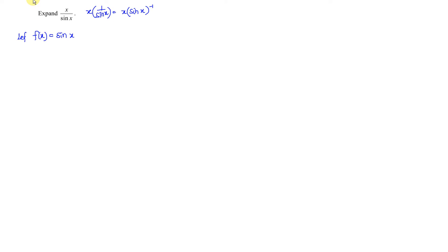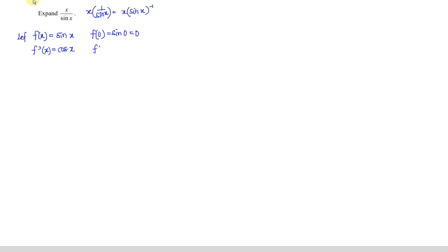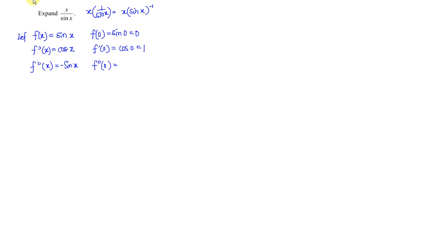At x equal to 0: f(0) equals sine 0, which is 0. Differentiating sine we obtain cosine, and substituting 0 we get cos 0 which equals 1. Differentiating again, we obtain negative sine, and substituting 0 gives sine 0 which is 0, so we get 0. Differentiating a third time, we differentiate sine to get cosine, substitute 0, cos 0 equals 1, times negative gives negative 1.